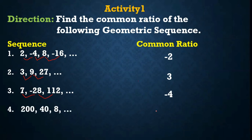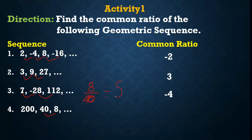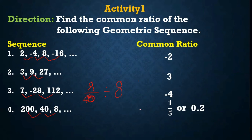For sequence number 4, we have 40 and 8. To find the common ratio, i-divide natin: 8 divided by 40. Hindi siya pwede maging 5 kasi mas maliit yung numerator kaysa sa denominator. So i-divide natin both numerator and denominator by 8: 8 divided by 8 is 1, and 40 divided by 8 is 5. Kaya nagiging 1/5 yung common ratio, or 1 over 5. I-decimal natin, magiging 0.2. Same process: 40 divided by 200 magiging 1 over 5 din pag i-simplify.